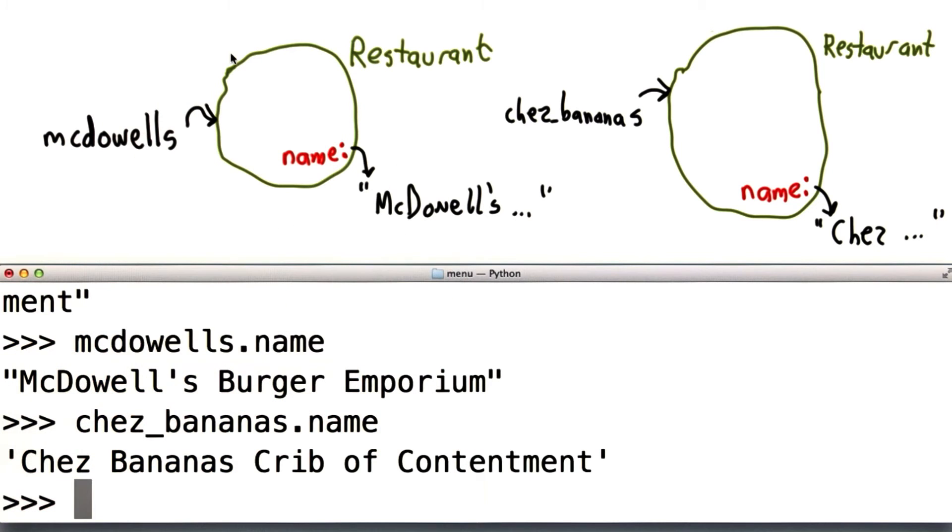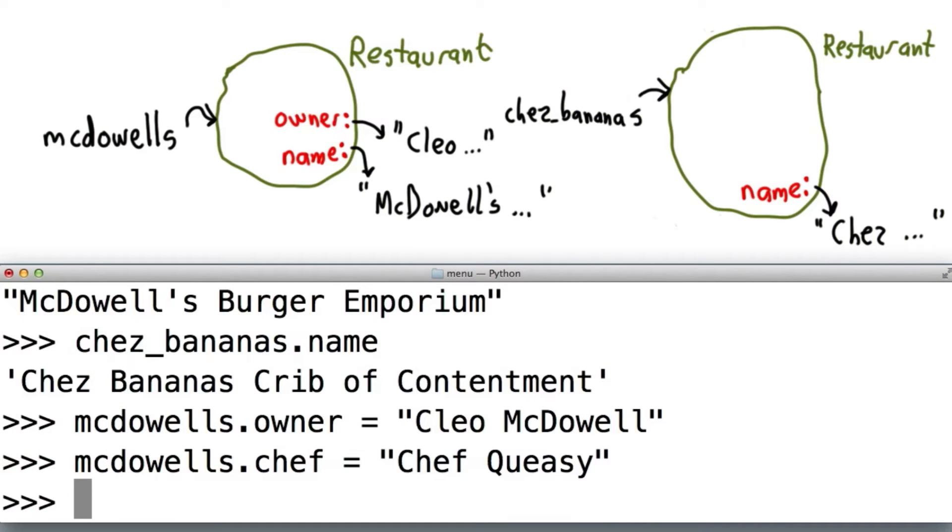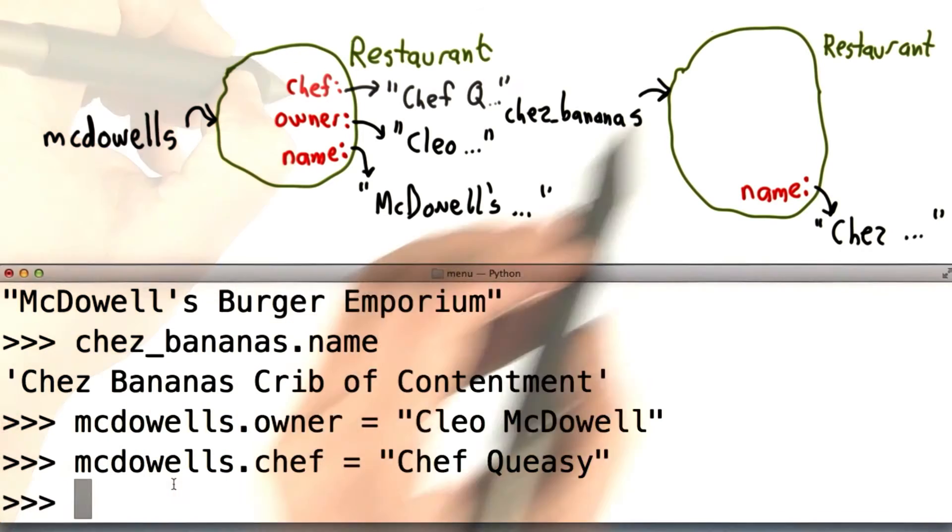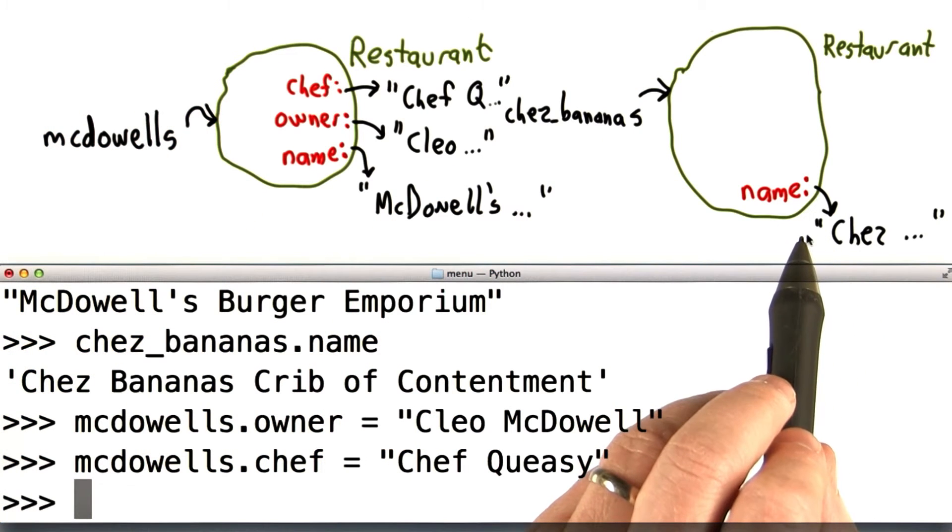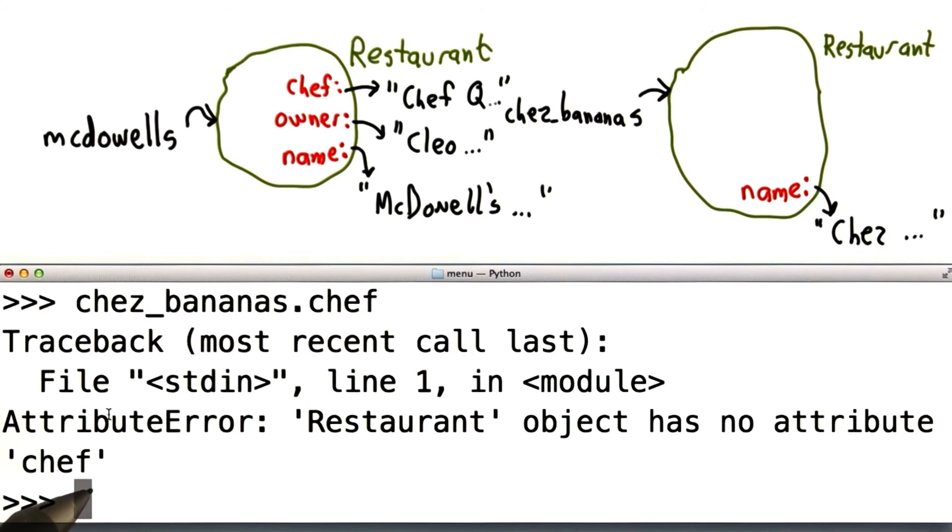They're separate objects with separate names. We can, of course, add other attributes. So we can add, say, an owner. Add another attribute, and we'll also add a chef attribute. These didn't change anything about the object that Chez Bananas points to. Just to confirm, Chez Bananas still has no chef.